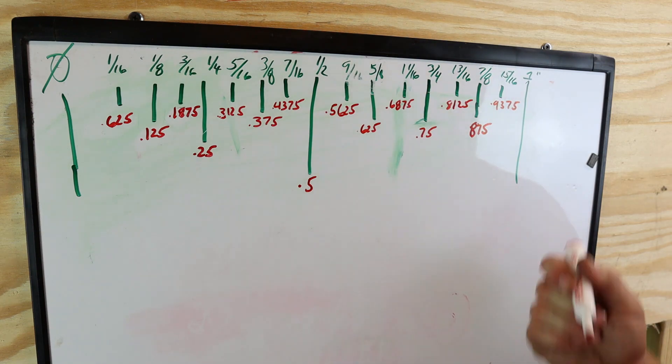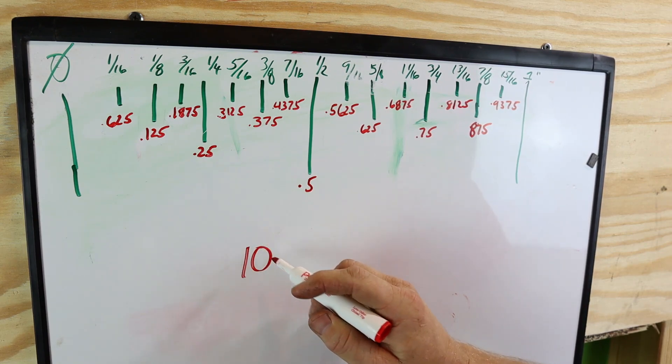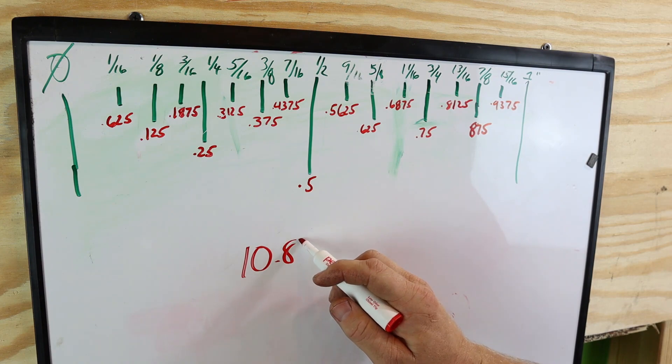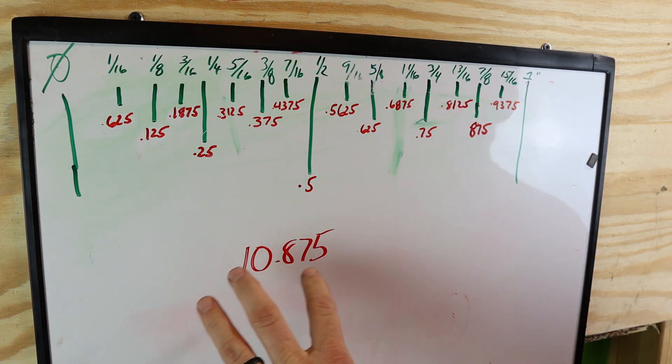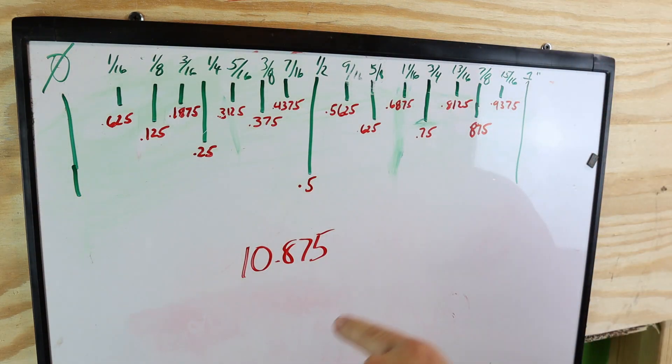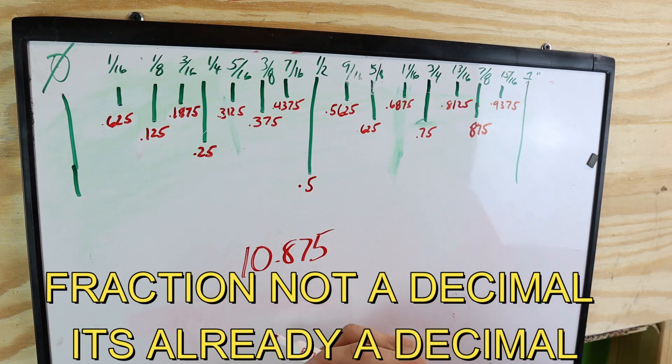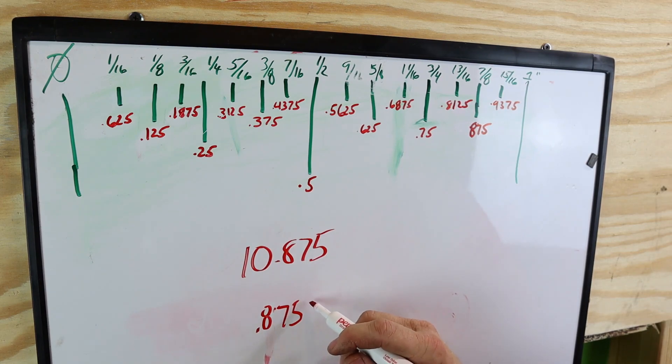Well, if you have a calculator, let's just say you have 10.875, okay, and that's what your calculator reading is, and you want to see what that 0.875 is on a ruler. Well, the only thing you got to do literally is take 0.875 and you have to times it by 16.